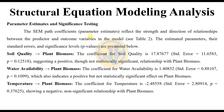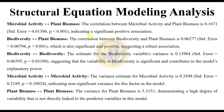For Microbial Activity predicting Plant Biomass, the correlation is 0.1671 with a P value less than 0.001, indicating a significant positive association. For Biodiversity predicting Plant Biomass, the correlation is 0.06277 with a P value less than 0.001, which is also significant and positive, suggesting a robust association.